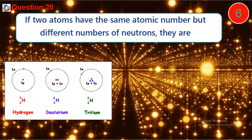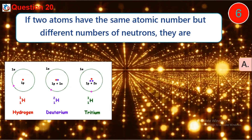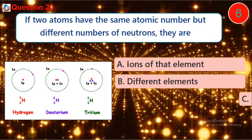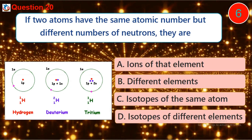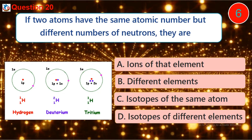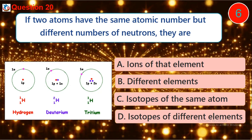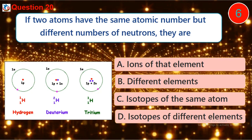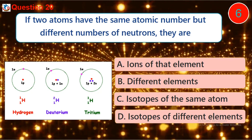Question 20. If two atoms have the same atomic number but different numbers of neutrons, they are: A. Ions of that element. B. Different elements. C. Isotopes of the same atom. D. Isotopes of different elements.